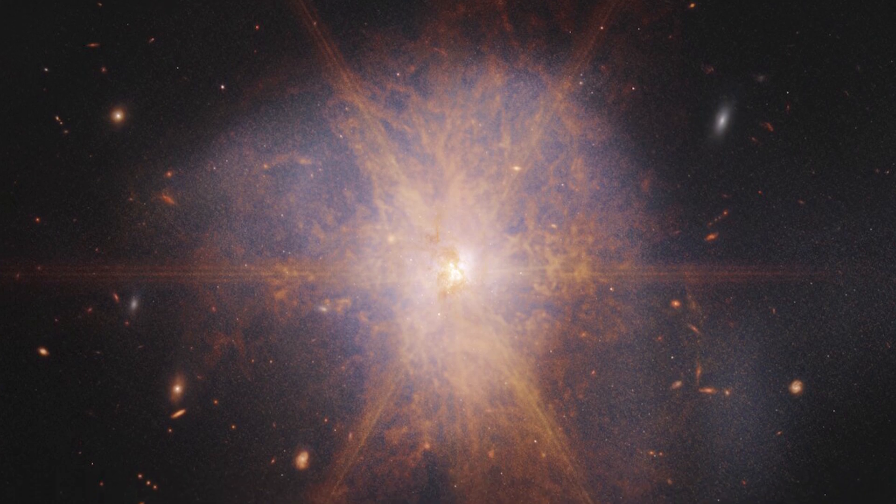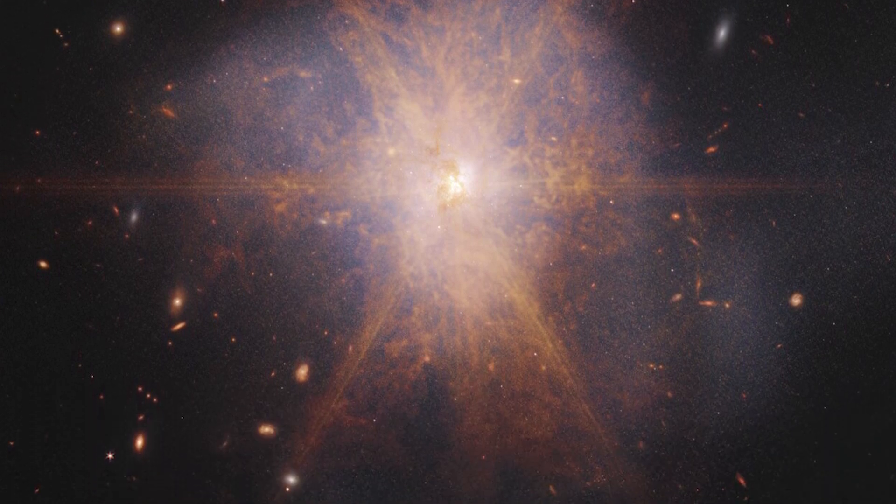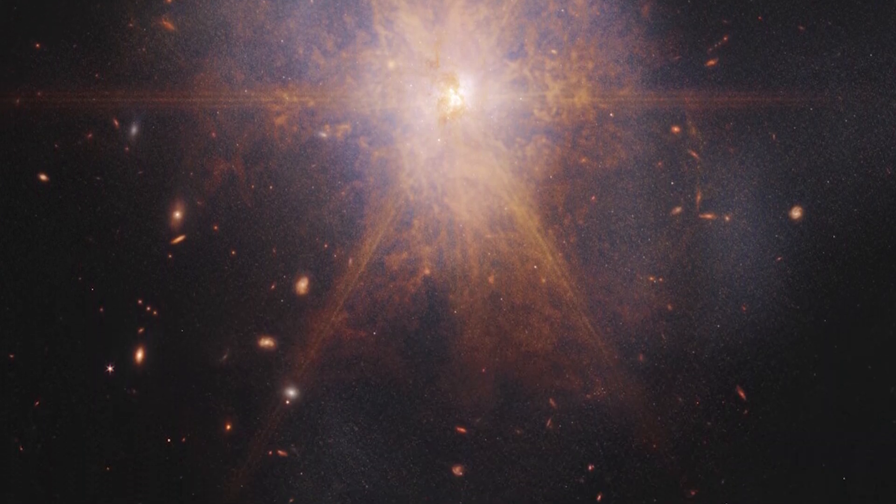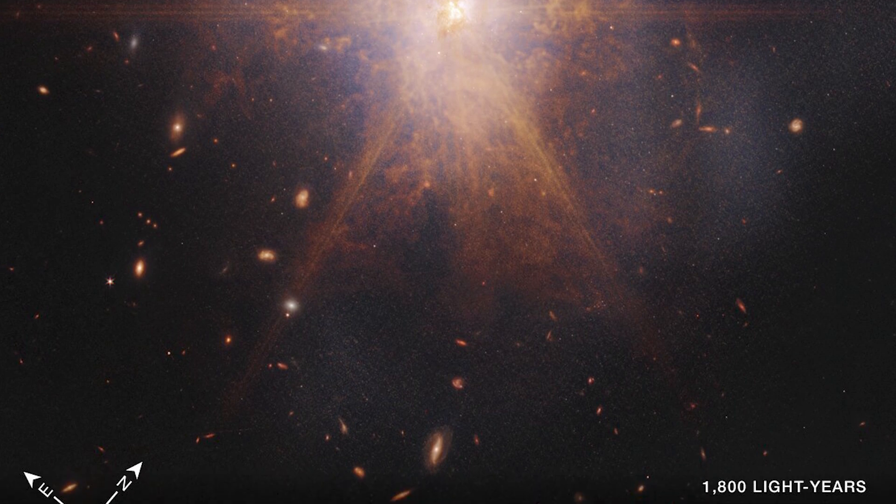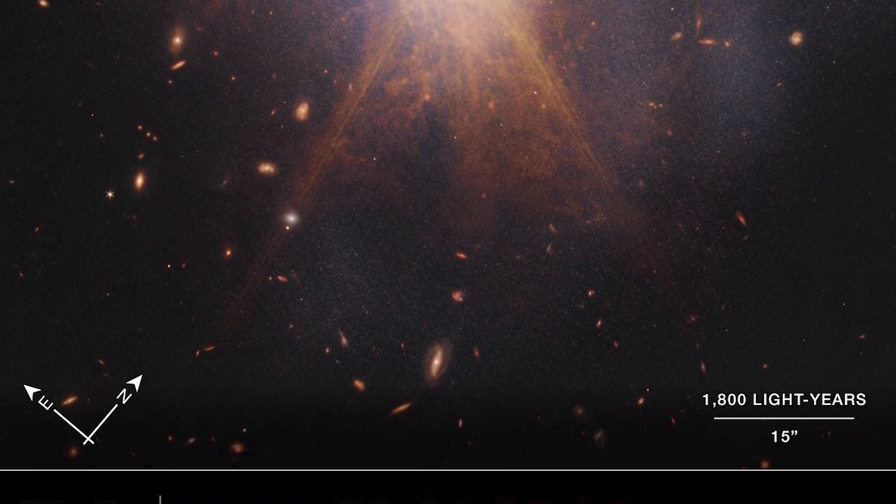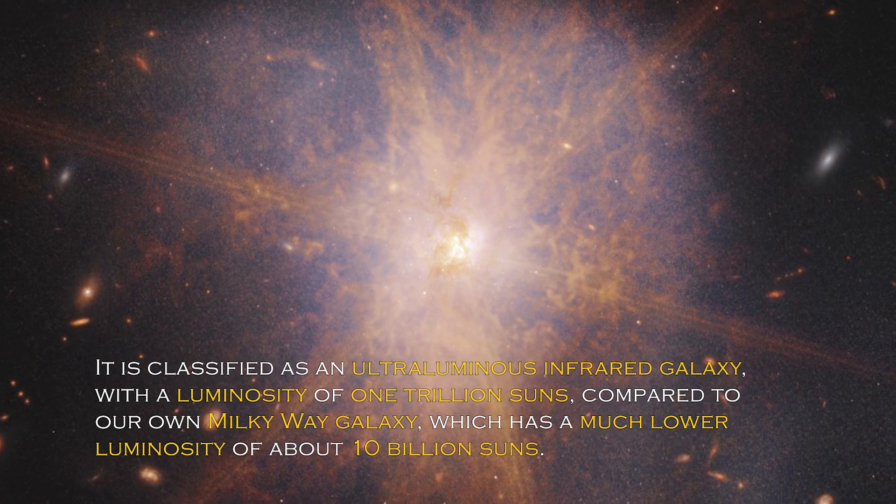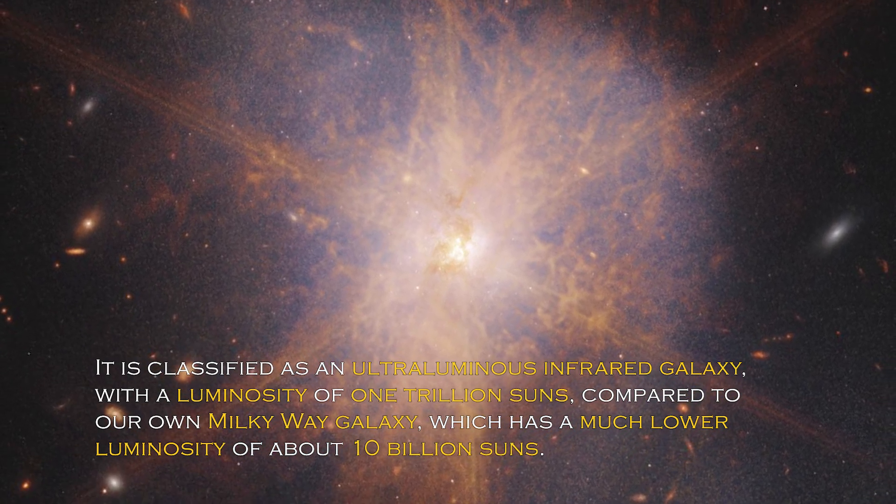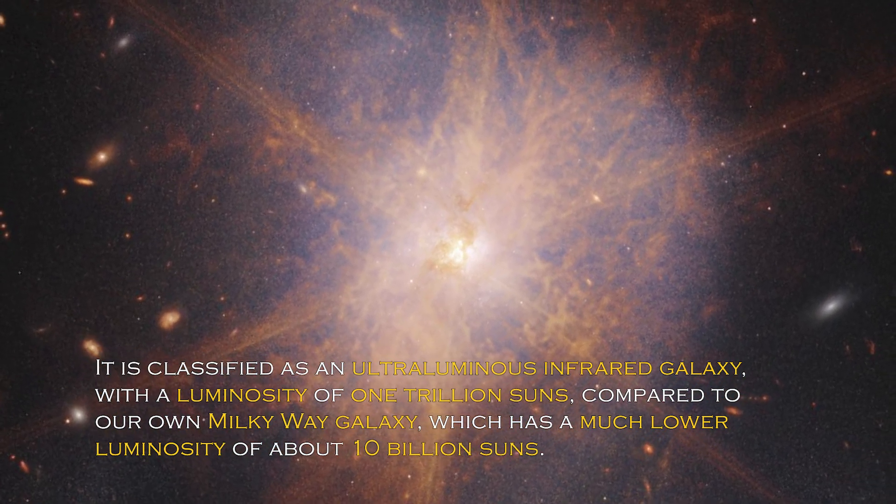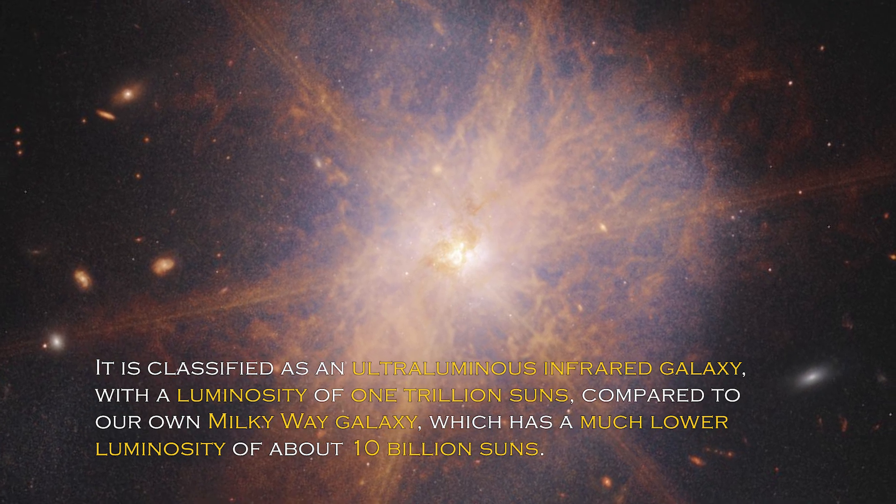When two spiral galaxies merge, the phenomenon known as ARP 220 shines brightest in the infrared, making it perfect for observation by the James Webb Space Telescope. It is classified as an ultra-luminous infrared galaxy, with a luminosity of one trillion suns compared to our own galaxy, the Milky Way, which has a much lower luminosity of about 10 billion suns.